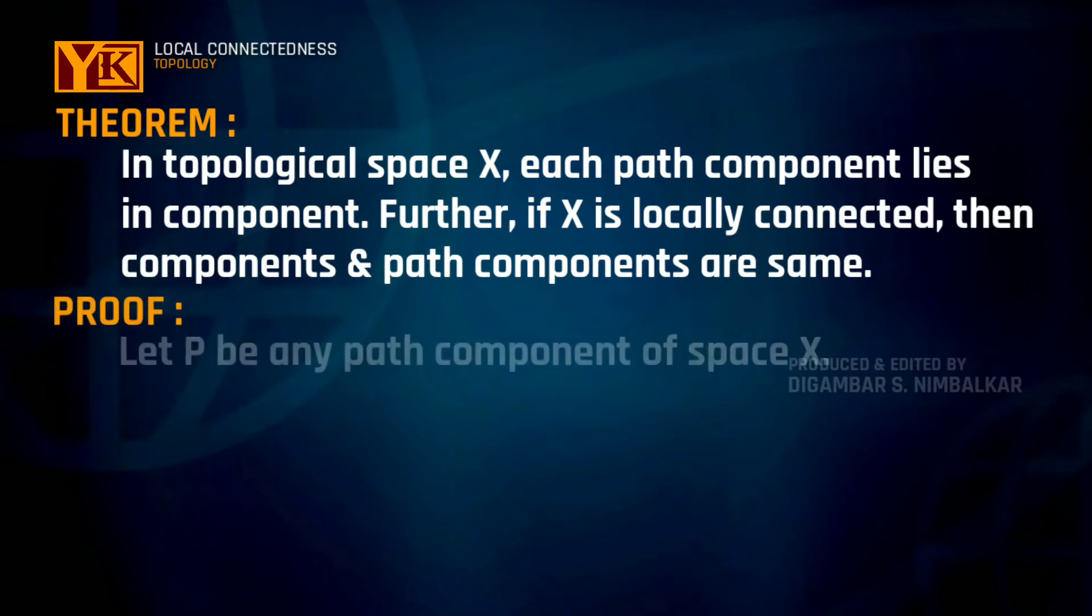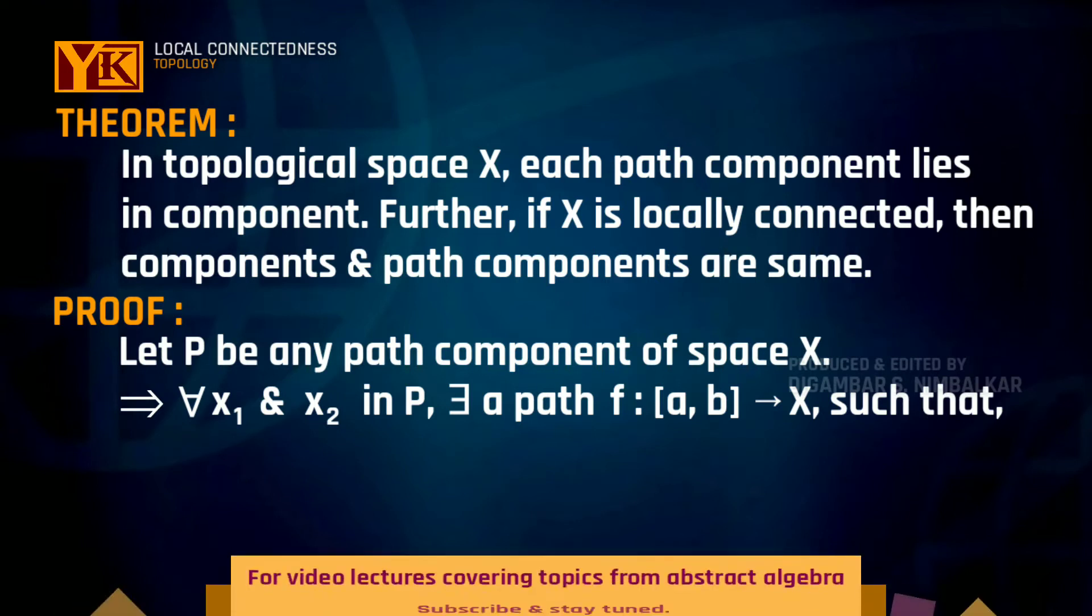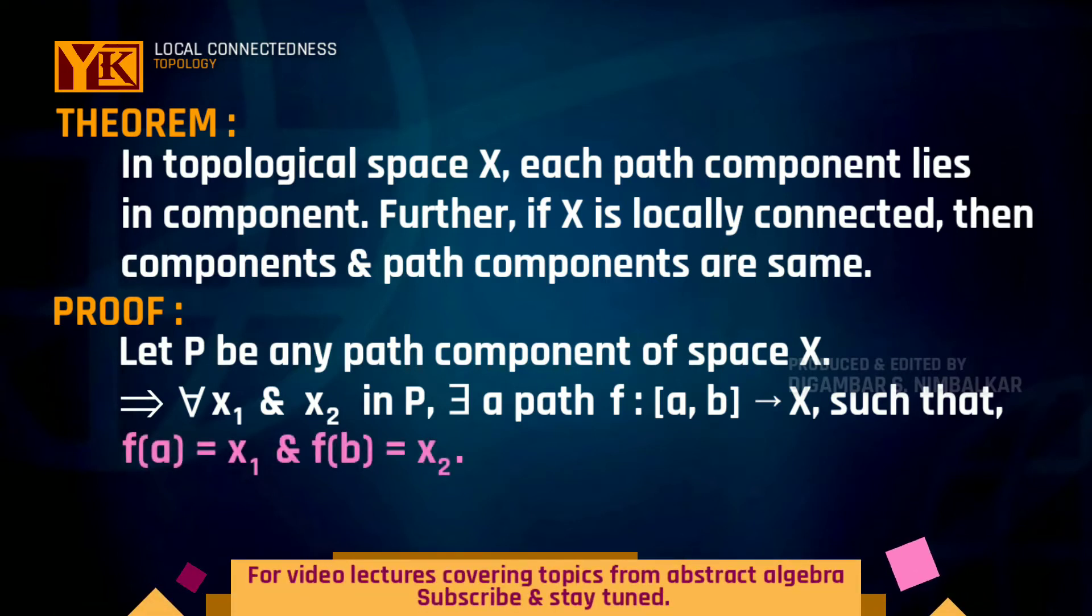To prove this, let X be a topological space and P be any path component of X. Then we will have for all x₁, x₂ belonging to P, there will exist a continuous function f from closed interval [a, b] to X such that f(a) equals x₁ and f(b) equals x₂.